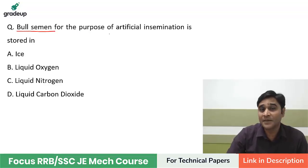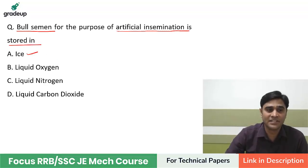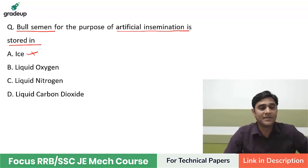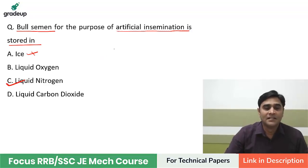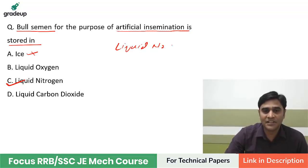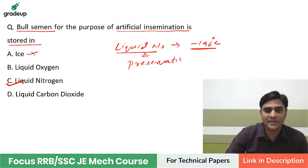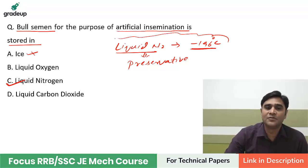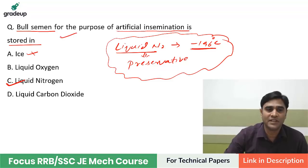Bull semen for the purpose of artificial insemination is stored in ice, liquid oxygen, liquid nitrogen, or liquid carbon dioxide? The answer is liquid nitrogen. The temperature of liquid nitrogen is minus 196 degrees Celsius. Liquid nitrogen is used as a preservative — it is used to preserve semen, ovum, tissues, and organs of the body.